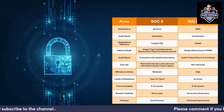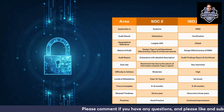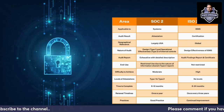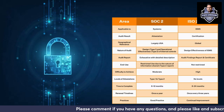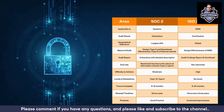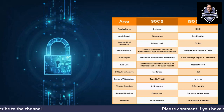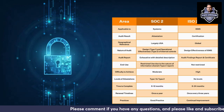For SOC 2, Type 1 is basically to make sure the design of the control is in place, while Type 2 is to make sure the controls are operating effectively. For ISO 27001, the nature of the audit is to make sure that the ISMS you have defined for your organization is operating effectively. SOC 2 audit reports are generally very descriptive in nature, and ISO 27001 audit findings come with a certificate. SOC 2 Type 2 reports have restricted use because of the sensitive nature of information shared.